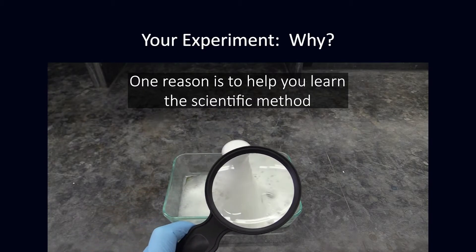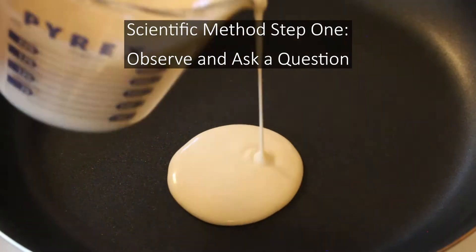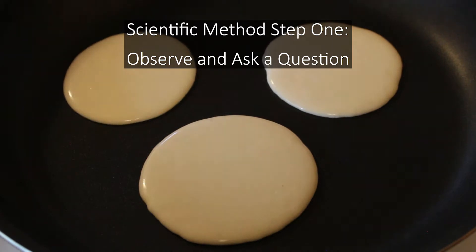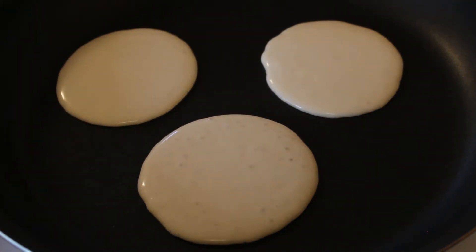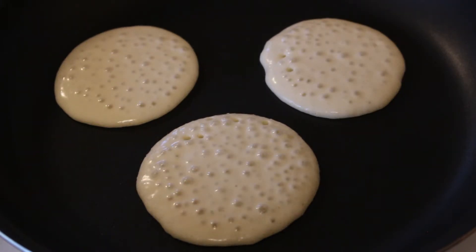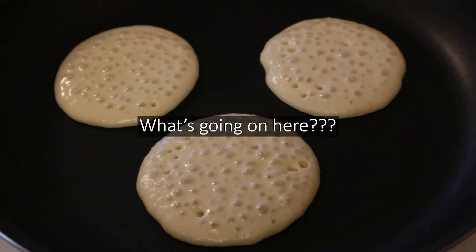This method usually involves four steps. Step one is to make an observation about a phenomenon, or whatever it is you're interested in, and ask a question about its nature. For example, let's say you're making pancakes and you notice bubbles form on them after they've been cooking a while. So you might wonder what's causing the bubbles to form.